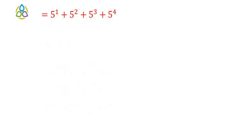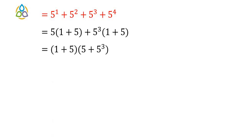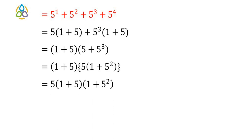Now we factorize 5 plus 5 square plus 5 cube plus 5 to the power 4. Taking 5 common from the first two terms gives 5 into 1 plus 5. Taking 5 cube common from the last two terms gives 5 cube into 1 plus 5. Taking 1 plus 5 common from both groups gives 1 plus 5 into 5 plus 5 cube. Then taking 5 common from the second factor gives 1 plus 5 into 5 into 1 plus 5 square, which we rewrite as 5 into 1 plus 5 into 1 plus 5 square.